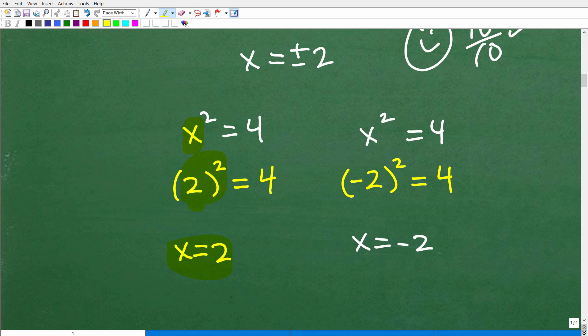So we're going to replace this x with a two. So we get two squared. What's two squared? Well, two squared is in fact four, so four equals four. That checks.